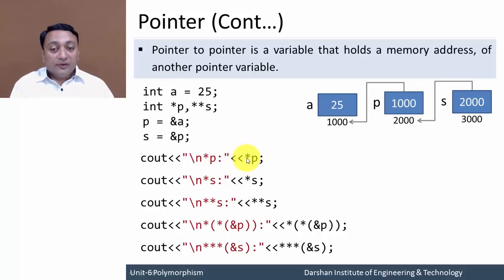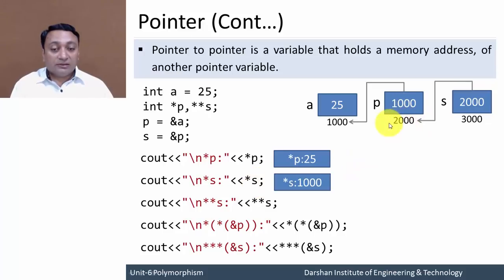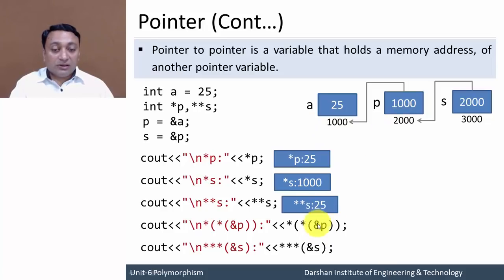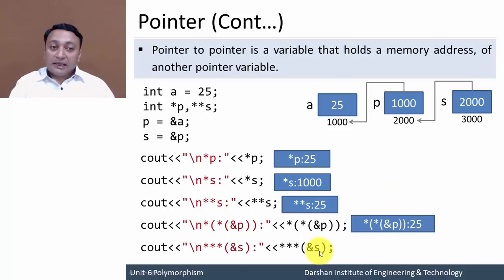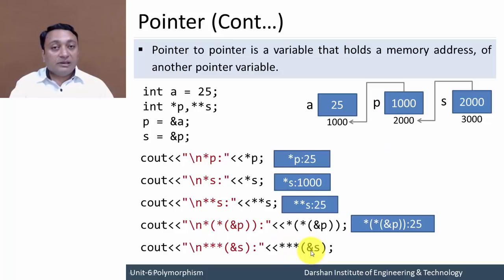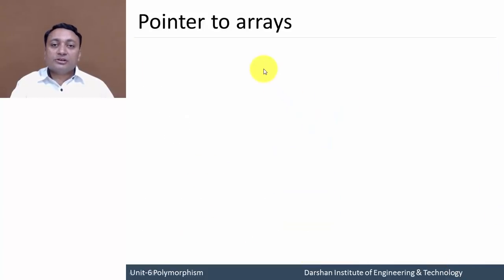Let us see some statements with pointer to pointer. *P is value at address P, which is 25. *S — S is 2000, value at address 2000 is 1000, so it displays 1000. **S — S is 2000, *2000 is 1000, *1000 is 25, so it displays 25. &P is 2000, value at 2000 is 1000, value at 1000 is 25 — displays 25. &S is 3000, value at 3000 is 2000, value at 2000 is 1000, value at 1000 is 25 — displays 25. You can use pointer variables to reach the actual value in any manner.